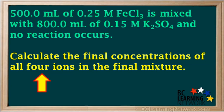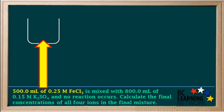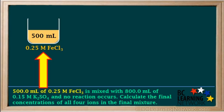We're asked to calculate the final concentrations of all four ions in the final mixture. The first time you do a problem like this, it's a good idea to visualize what's going on. We start by adding 500 milliliters of 0.25 molar FeCl3 to a beaker, and we'll make a note of that here.